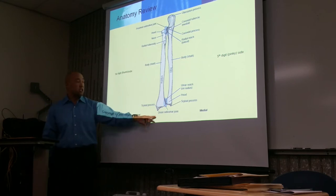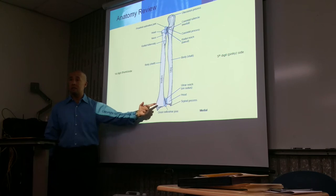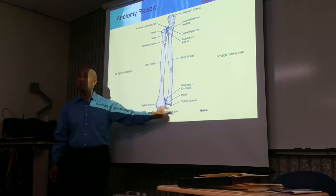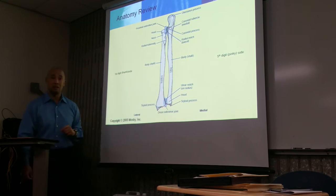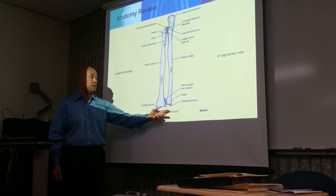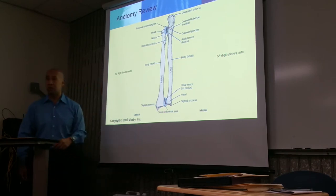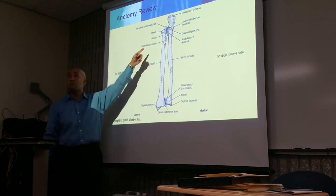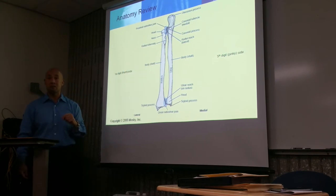The bony projection here is the styloid process of the radius. Going to the ulna, you also have a bony projection — the styloid process of the ulna. The articulation between the two bones is the radial ulnar joint. We have two radial ulnar joints: one is distal towards the wrist, and the other is proximal towards the elbow.